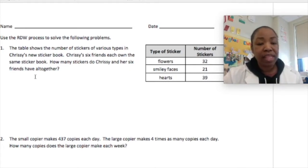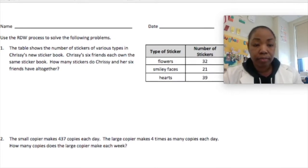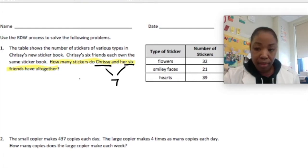Number one, the table shows the number of stickers of various types in Chrissy's new sticker book. Chrissy's six friends each own the same sticker book. How many stickers do Chrissy and her six friends have all together? So we need to figure out how many stickers they have all together. We have Chrissy and her six friends. Put that together, it's seven of them, right? Chrissy's one and the six friends is six.